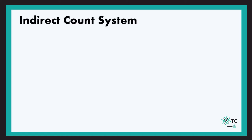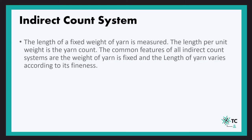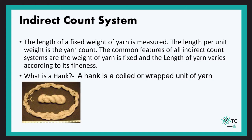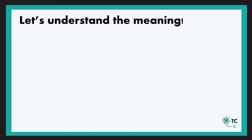Now let us understand the second system, the indirect system. In the indirect system, we keep the weight of the yarn constant. Before that, understand the meaning of a hank — a hank is a coiled or wrapped unit of yarn which has a certain length, which can be 840 yards, 1000 meters, etc. It looks like what is shown in the picture.